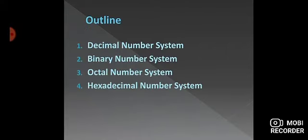Here are all the points we covered today for the revision. First is decimal number system, second is binary number system, third is octal number system, and fourth is hexadecimal number system. All these number systems have different conversions like decimal to binary, binary to decimal, octal to decimal, decimal to octal, hexadecimal to decimal, and decimal to hexadecimal. We will go through all these conversions in this chapter.